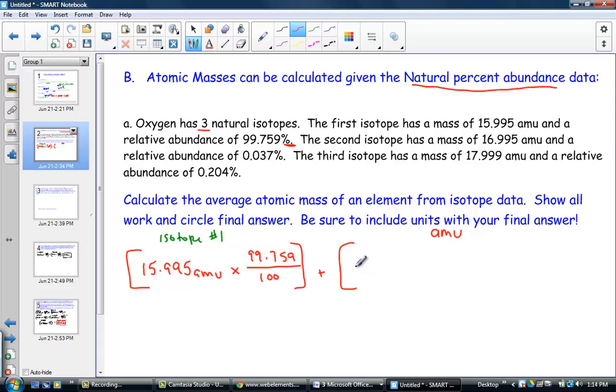The second isotope had a mass of 16.995 atomic mass units. We're going to multiply that by its relative abundance, which was not much, right? 0.037% parts out of a hundred parts. And we had a third isotope. I'm going to record the information from isotope number three inside its own bracket: 17.999 AMUs times the percent abundance 0.204 over 100 to remind myself that's what percent means, parts out of a hundred parts. And we're ready to calculate.